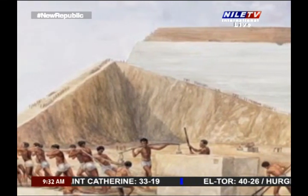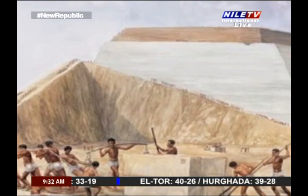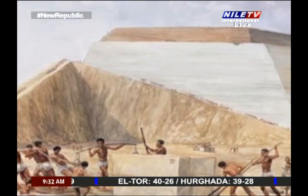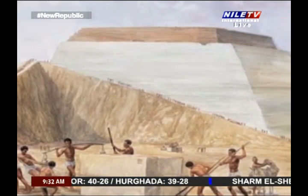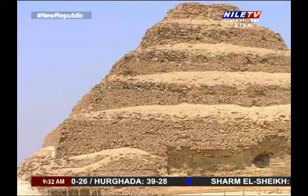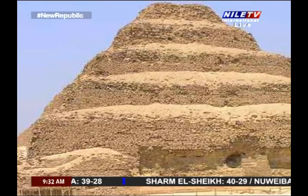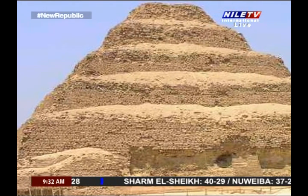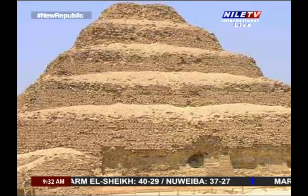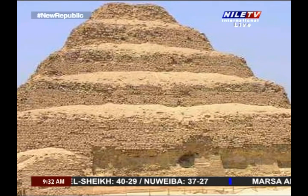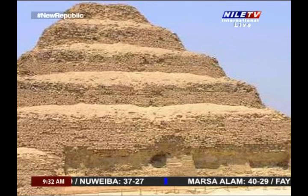The design graduated from the mastaba style of tomb and took it to a larger scale by composing six gradual mastabas, or steps, decreasing in size toward the top, rising above more than 30 chambers of burials cut under the ground.